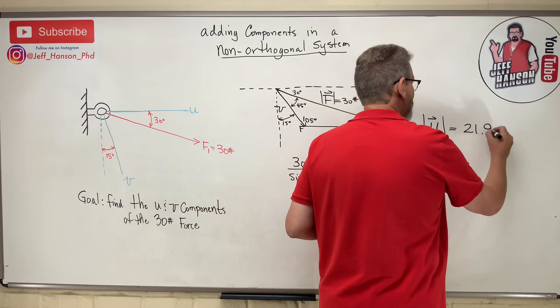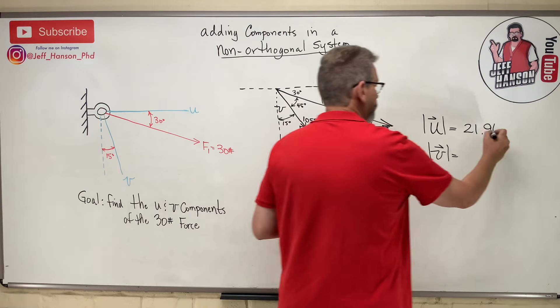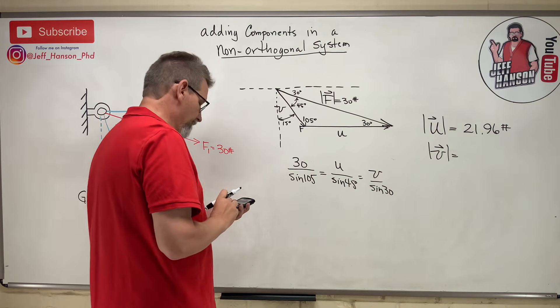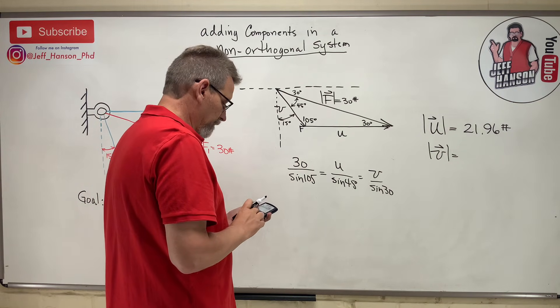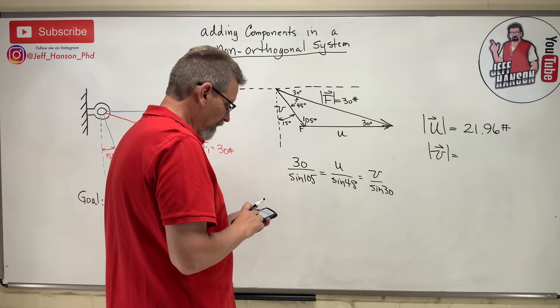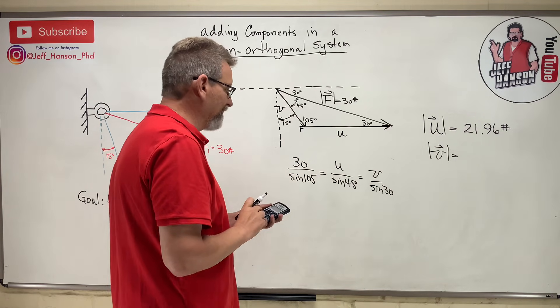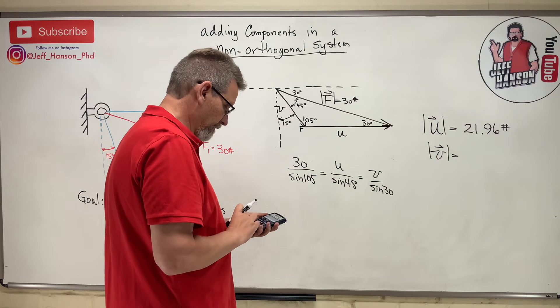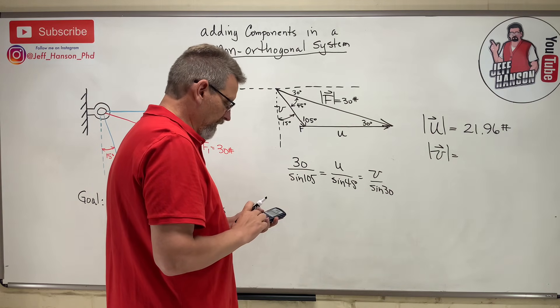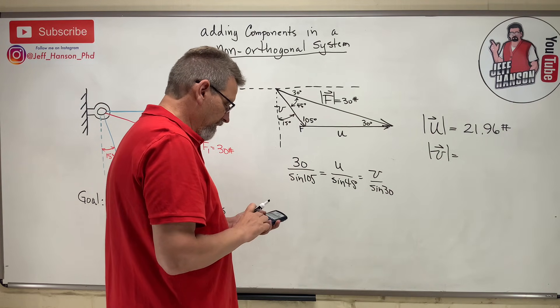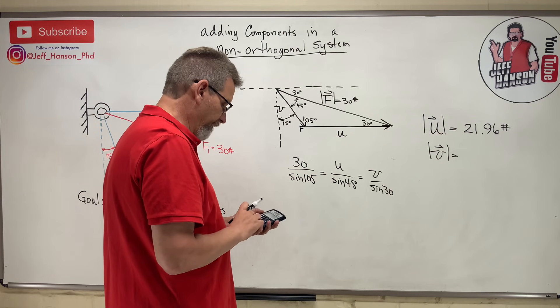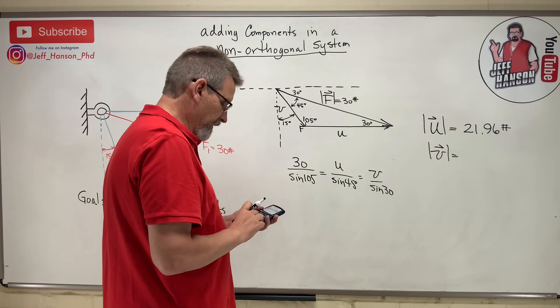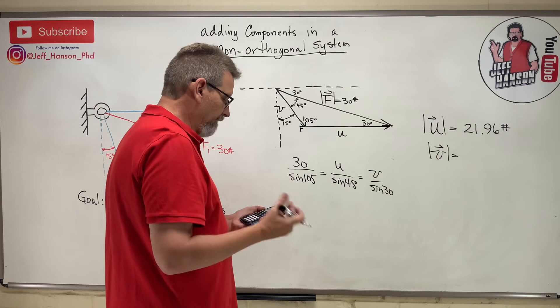I don't expect V to be quite as big, but let's see what we get for V. Well, that's all of that, instead now it's multiplied by the sine of 30, which is 0.5, isn't it? Let me do that right: 30 divided by the sine of 105 equals 31.058 times 0.5 equals 15.53.